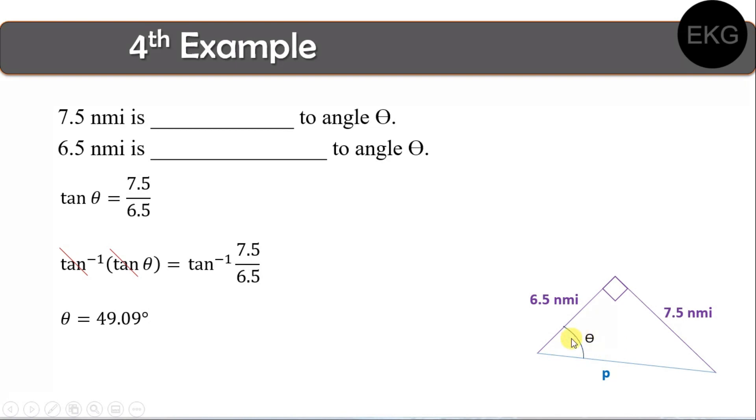Now, bakit kailangan natin isolve itong theta? Bakit kailangan natin isolve ito? Dahil magagamit natin yan, by using this particular trigonometric function, sine theta. Sine theta is equal to, the opposite over the hypotenuse. Opposite ng theta is 7.5. Hypotenuse ng triangle is P. So, by cross-multiplying this one, yung P pupunta sa ibabaw, ito na mga sin theta pupunta sa ilalim ng 7.5. So, ito na yung magre-resulta. So, sinabsitute natin yung value ng theta na nasolve natin kanina. Then, pag-input nyo ito sa calculator, we will arrive on this particular answer.